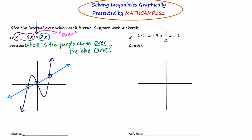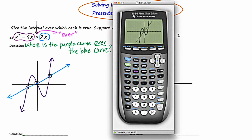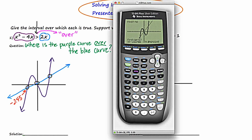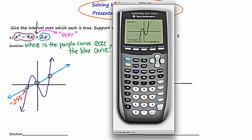The next thing I need to do is use the calculator to figure out where exactly these intersections happen. You might remember from the first lab that we need to use the second trace intersect button — second trace intersect, which is option five. Move the cursor to the first point of intersection, the lower leftmost intersection, and press enter three times. I'm getting negative 2.45. Then for the middle intersection, second trace five, move the cursor to the middle point of intersection, enter three times — this one's at zero. Repeat the process for the rightmost intersection point — this is 2.45.